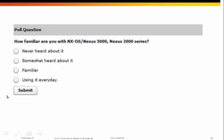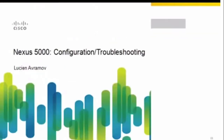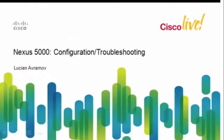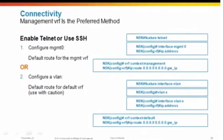Thank you, Dan. Now let's talk about the Nexus 5000. First, let's talk about configuration — that's our next four slides. After that, we'll discuss troubleshooting tools and other things you can use to analyze your network with the 5K. The first main topic is connectivity — how to establish connectivity to your 5K so you can configure it.